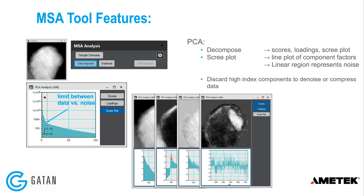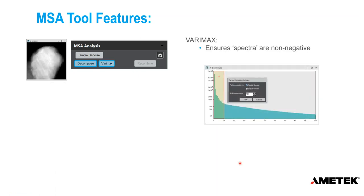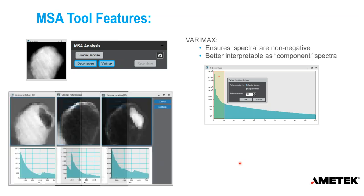One thing that's clear when looking at PCA plots is that some regions are negative and some positive. This is where VaryMax comes in: VaryMax performs factor rotation to ensure spectra are non-negative, making results more interpretable as component spectra. One thing to always remember is that these are not real spectra — they are statistically significant components in the data. It's always worth checking the actual spectrum image data to verify the components make sense.